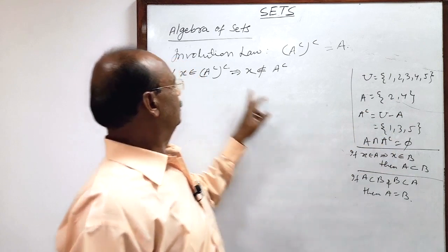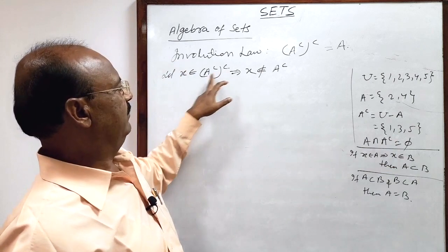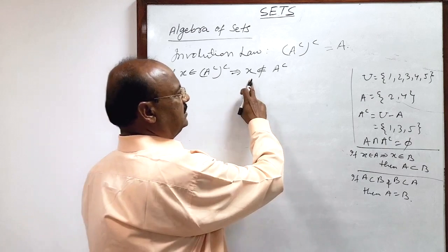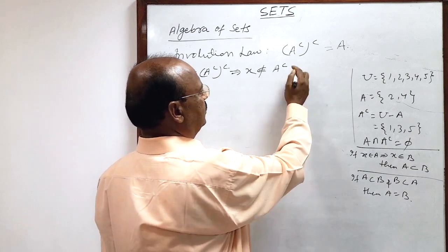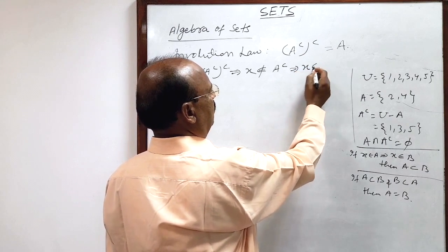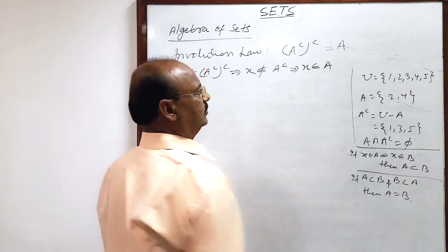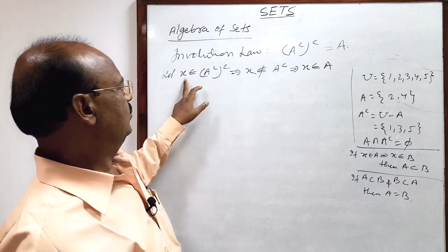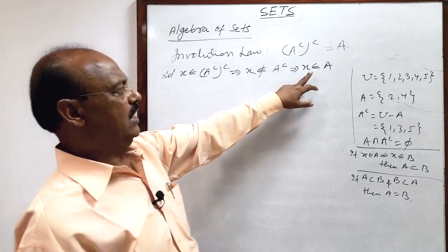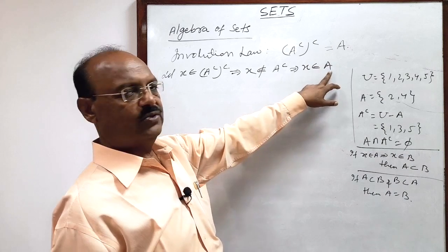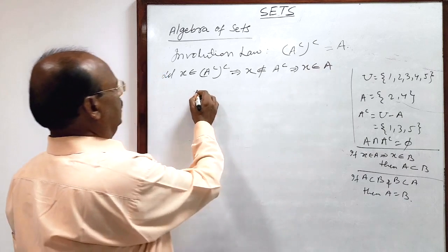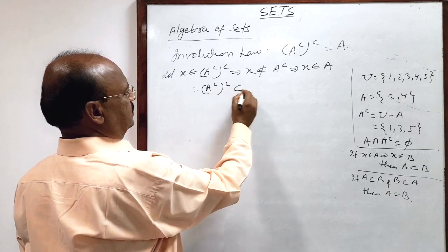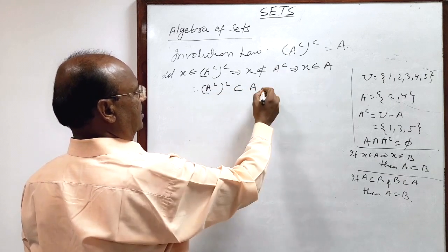So if x belongs to the complement of this set, x will not belong to this set, and if x is not belonging to A complement, it means x belongs to set A. We had started with the left-hand side, x belonging to the left-hand side, and we arrive at x belonging to the right-hand side, i.e., x belongs to set A. Therefore, the left-hand side is a subset of set A — this is relation number one.